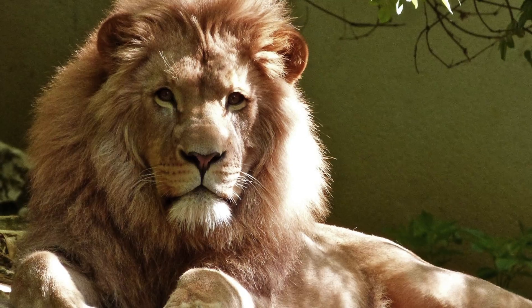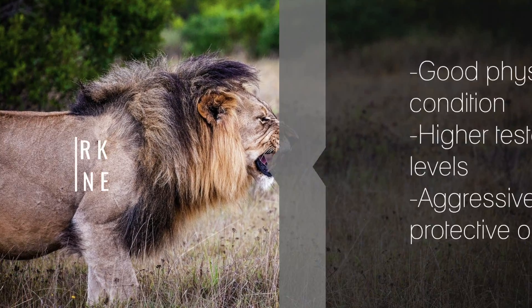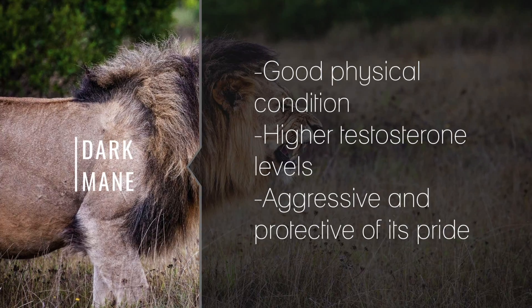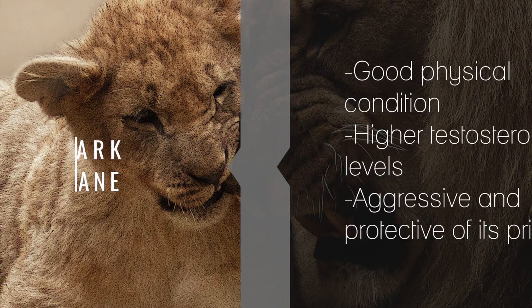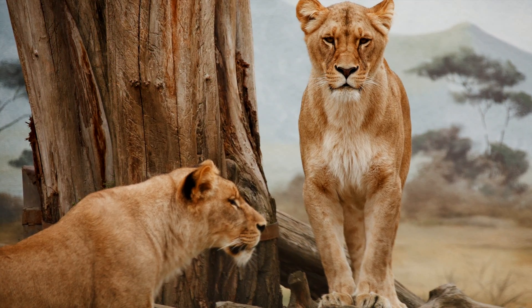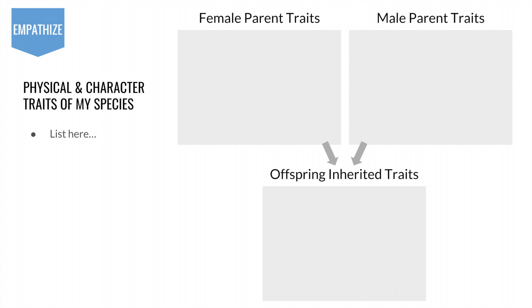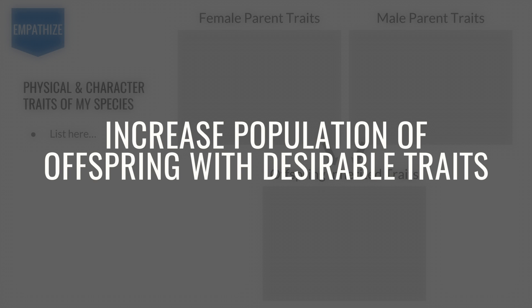I used the lion as an example. I told them that I would select a male with the darkest mane to breed, because it indicates good physical condition as well as higher testosterone levels, which makes it aggressive and protective of its pride — and females prefer lions with darker manes. Using a Google Slides graphic organizer, students listed the advantageous physical and behavioral traits of the female and male, and then the traits that the offspring would theoretically inherit. The sanctuary would increase its population by producing offspring with desirable traits.